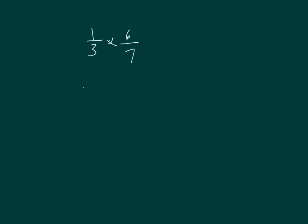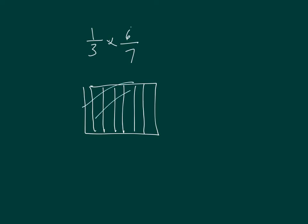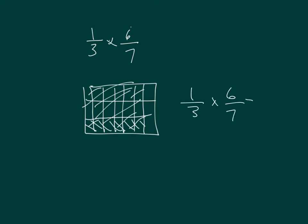Let's work out another one: one-third times six-sevenths. Model six-sevenths first, and then take one-third. That gives us six out of twenty-one. Six twenty-firsts — there's our answer.